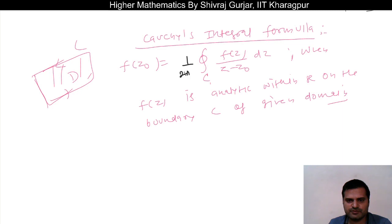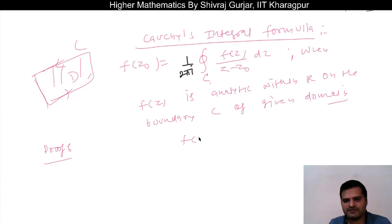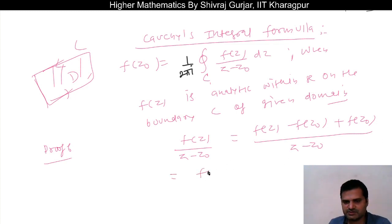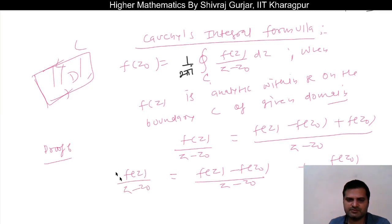There is a factor of 1 over 2πi here. What is given: f(z) divided by (z minus z₀), which we can write as [f(z) minus f(z₀) plus f(z₀)] divided by (z minus z₀). This can be written as [f(z) minus f(z₀)] divided by (z minus z₀) plus f(z₀) divided by (z minus z₀). So this is the contour integration along C.